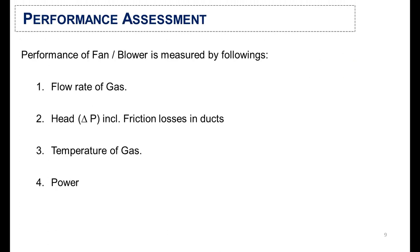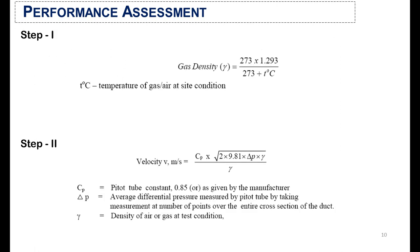The following parameters are used to assess the performance of blowers or fans. First is the flow rate of the gas — at what value the gas is being handled in the fan or blower. Second is the head value — that is the pressure drop at the suction and discharge piping of the blower, which also includes friction losses. Third is the temperature of the gas, and fourth is the power requirement for the fan or blower.